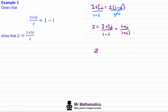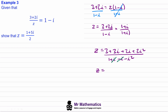Expanding the numerator gives 3 plus 3i plus 2i plus 2i squared. The denominator expands to 1 plus i minus i minus i squared. The positive i and negative i cancel. In the numerator, 2i squared becomes 2 times negative 1, so 3 minus 2 gives 1, and 3i plus 2i gives 5i. In the denominator, negative i squared becomes positive 1, so 1 plus 1 equals 2. This gives z equals 1 plus 5i over 2, which is what we were asked to show.